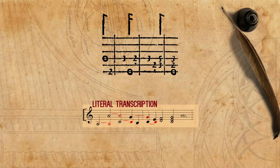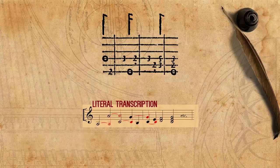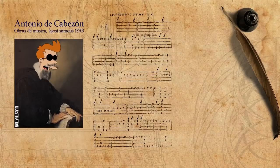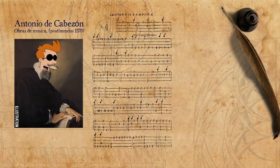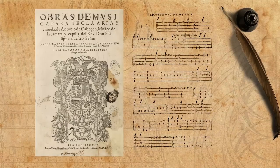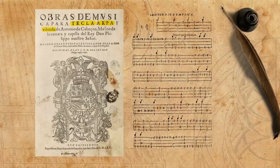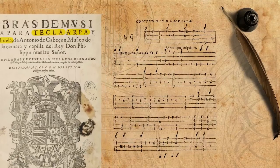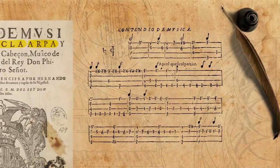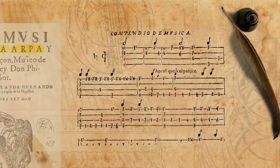Now let's see the same musical excerpt in an intabulation made by the blind organist Antonio de Cabezón from roughly the same time. On the title page of this publication it says that it is meant for keyboard, harp, and vihuela, a Spanish plucked instrument. Although on the surface it seems similar to the Italian Lute Tablature, it includes more details of the polyphony.